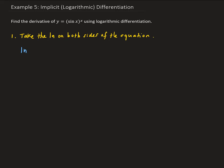So we have natural log y equals natural log of sin x all raised to the x power. On the right-hand side, that allows us to bring down the x in front of the natural log, giving us: natural log y equals x times the natural log of sin x.